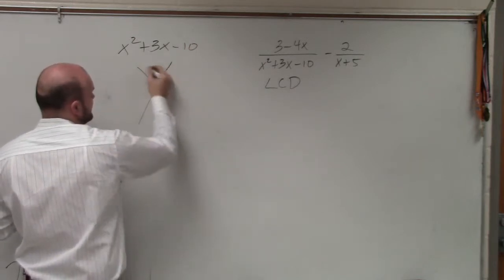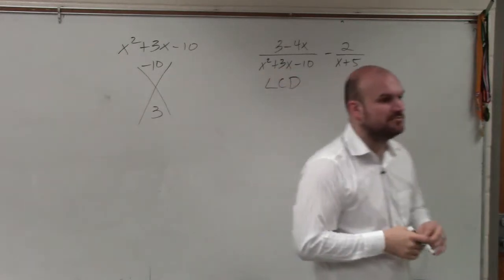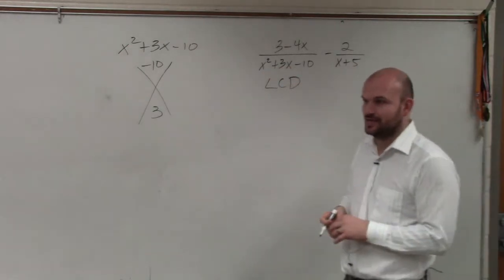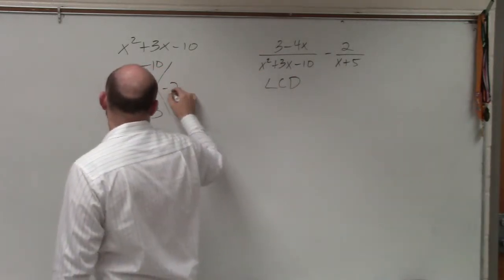In this class, we talked about factoring. What two numbers multiply to give you -10 and add to give you positive 3? 5 and -2.